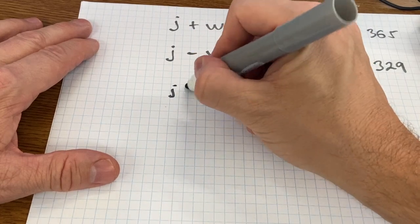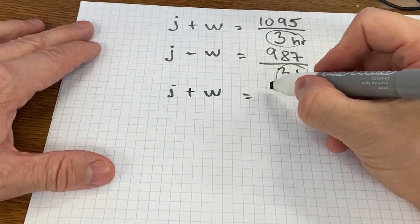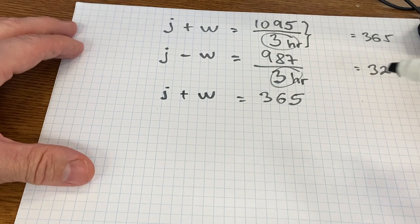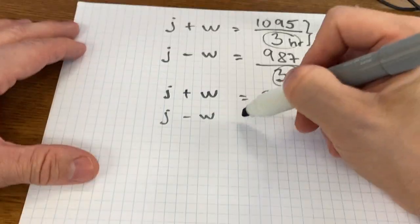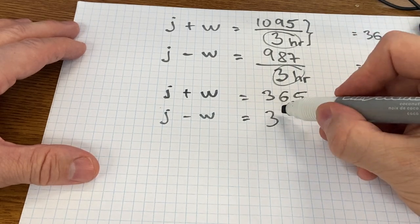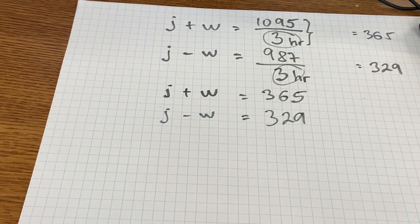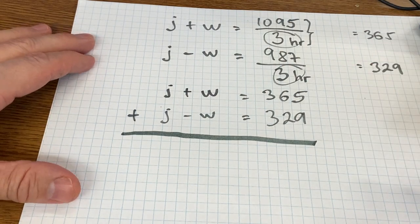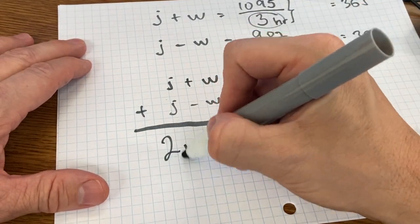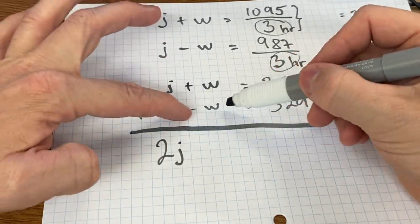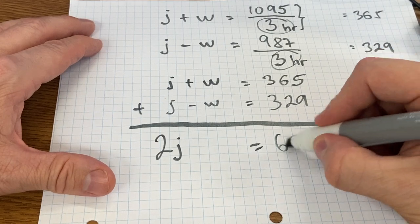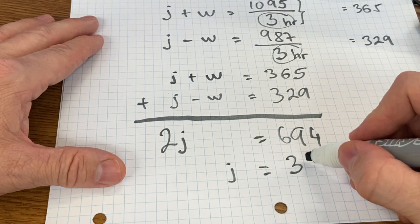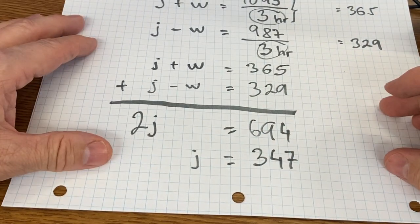Let me just rewrite the equations here. So the jet plus wind will have a resultant speed of 365, and jet minus the wind is only 329. These two equations can be added, and when they are added they look like this: 2J plus W plus minus W is nothing there, equals 694. Therefore, the speed of the jet is 347 miles per hour or kilometers per hour or knots, whatever you like.